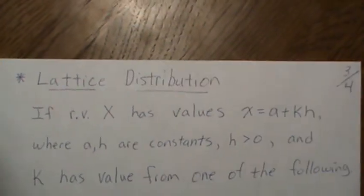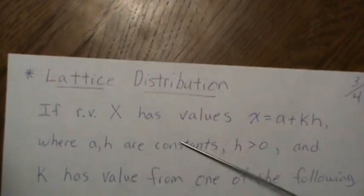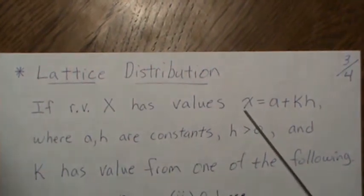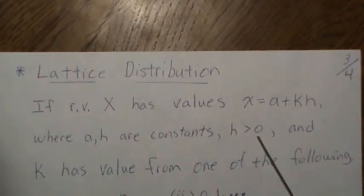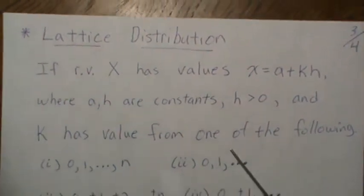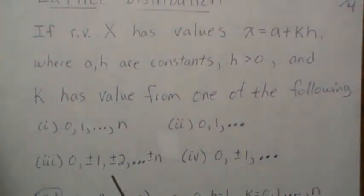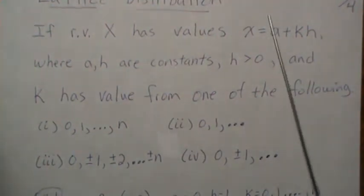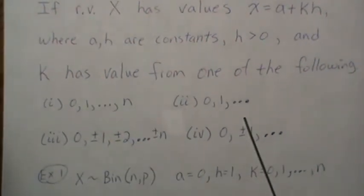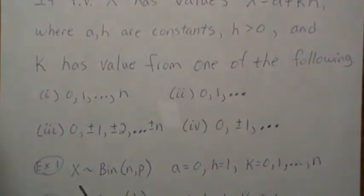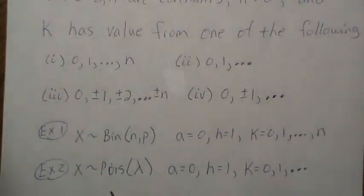This is a little background on what a lattice distribution is. If x is a random variable taking on values a + kh, where a and h are constants and h > 0, and k takes on integral values — either 0 to n, 0 to infinity, -n to +n, or all integers — then x is said to have a lattice distribution. For example, if x is binomial, it's a lattice distribution with a = 0, h = 1, and k going from 0 to n. If it's a Poisson distribution, a = 0, h = 1, and k goes from 0 to infinity.